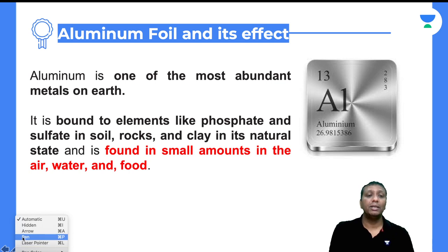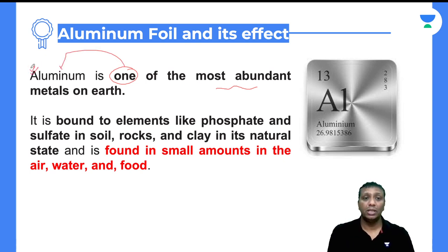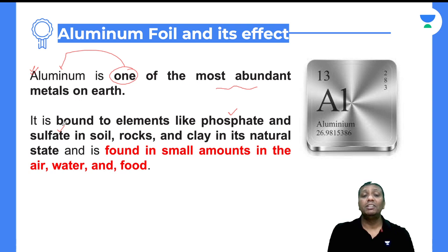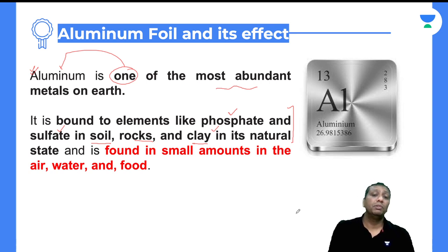One more important point: if you check the metals inside the earth, aluminium is one of the most abundant metals on earth. A key property of aluminium is that it can bind with phosphates and sulfates present in the soil. Aluminium is easily available in clay soils and rocky materials as aluminium phosphate and aluminium sulfate. Some amounts of aluminium are also available in air and water, but maximum amounts are found in soil, rocks, and clay materials.